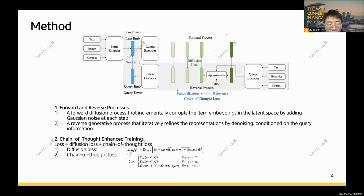First, we have the forward and reverse processes. The forward diffusion process incrementally corrupts item embeddings in the latent space by adding Gaussian noise step-by-step. Conversely, the reverse generative process refines the representations by denoising, conditioned on the query information.